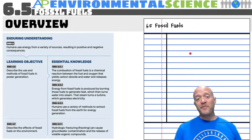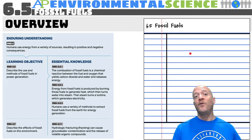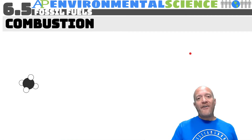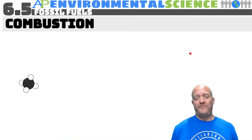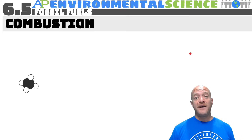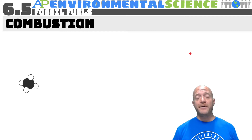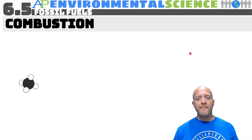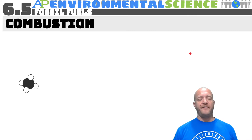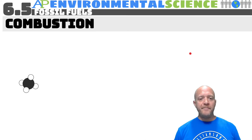Fossil fuels — remember we have three types: coal, petroleum, and natural gas. They all produce energy through the process of combustion. Combustion is burning something in the presence of oxygen. We're starting with methane, which is the purest of the fossil fuels and the major component of natural gas.